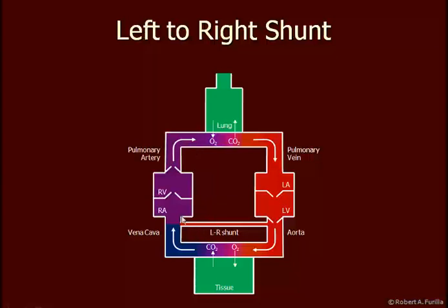This means that some of the oxygenated blood is going to go back and pick up oxygen again. This is not a serious problem, although it does mean that there is some blood flow that is not getting to the tissues. An example of a left-to-right shunt might be a patent ductus arteriosus.